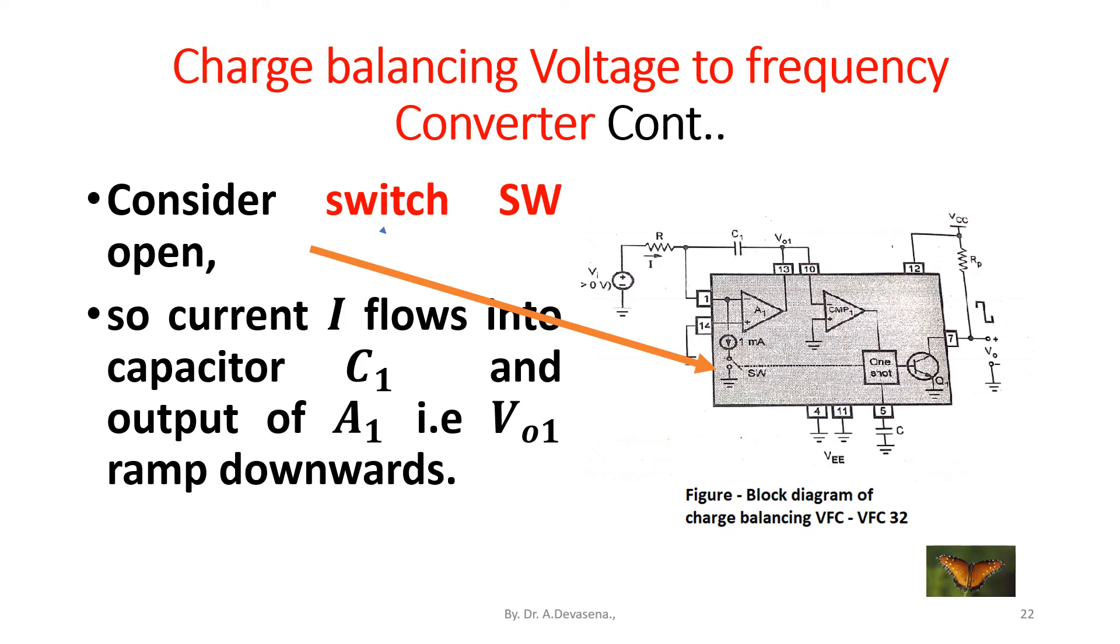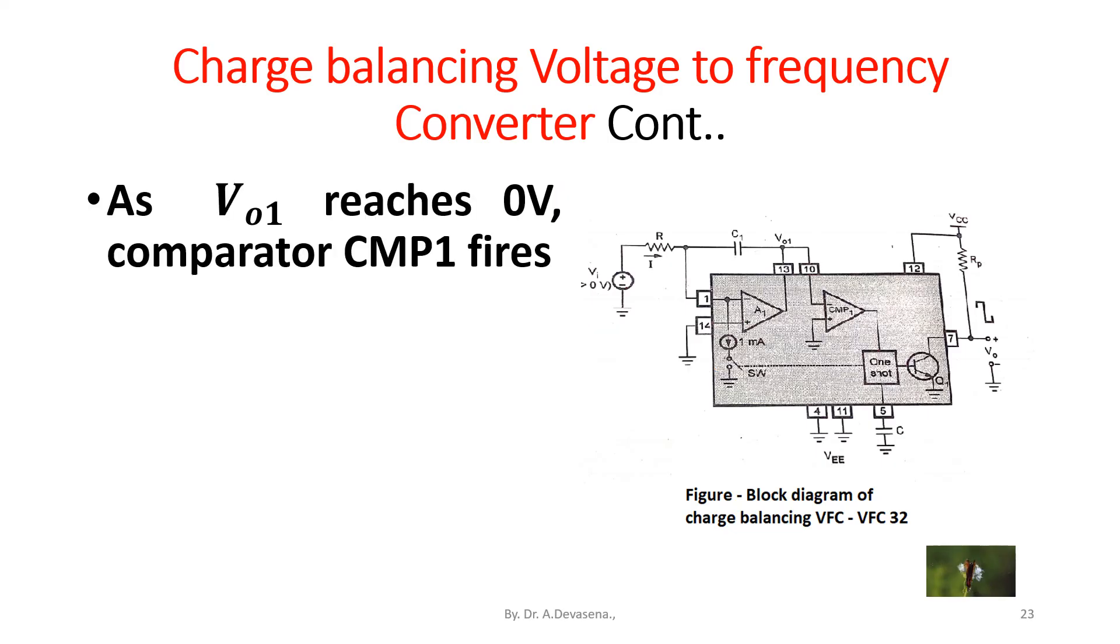So current I flows into the capacitor C1 and output of A1, that is V_o1, ramps downwards. As V_o1 reaches 0 volts,